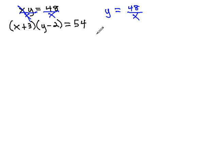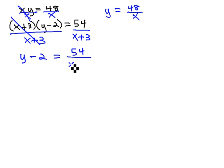Because I divided with the factor with x in the first equation, we're going to divide by that same factor. The factor with x is x plus three this time on both sides of the equation. That gives us y minus two equals fifty-four over x plus three. When we do that, we'll get in a situation that we can make an easy substitution. Y is equal to forty-eight over x, and that can replace the y in the other equation.